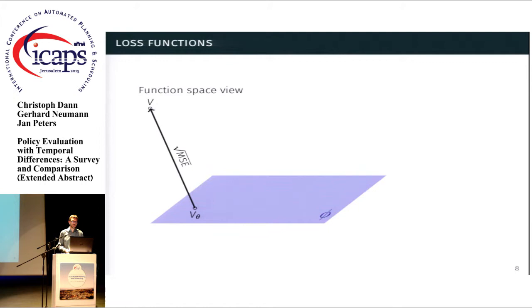And one way to understand this is to look at the function space view of things, where each value function is basically a point in this function space. And the space of all value functions that we can represent with this linear parameterization that we are given is basically a linear subspace, here shown as this blue plane. So what we want to do is to minimize the mean squared error, which is the distance between the true value function v and our estimate in the linear subspace.